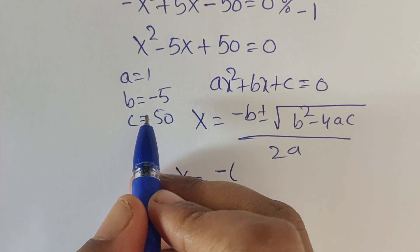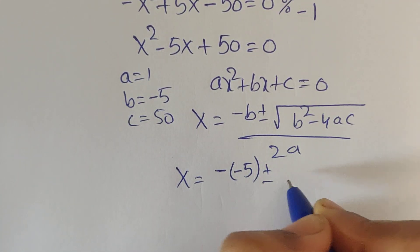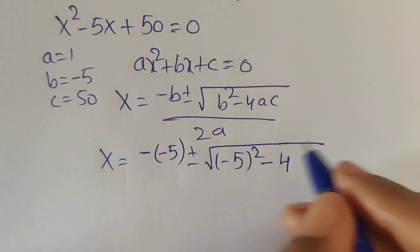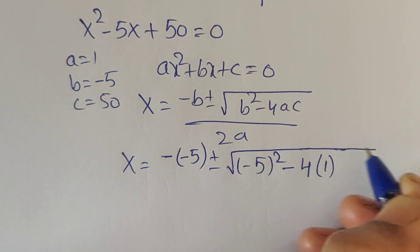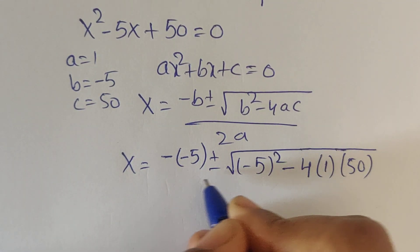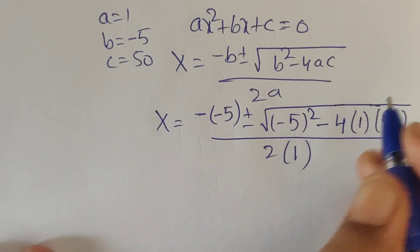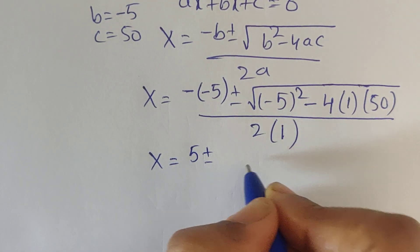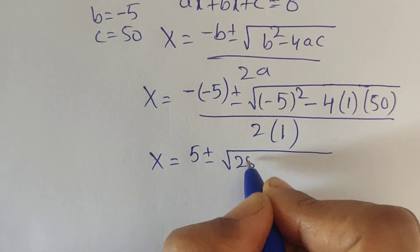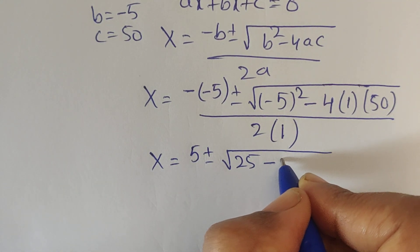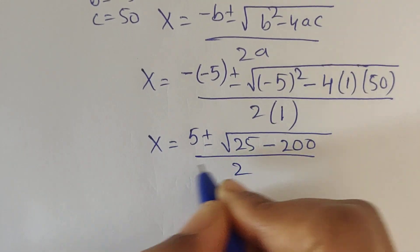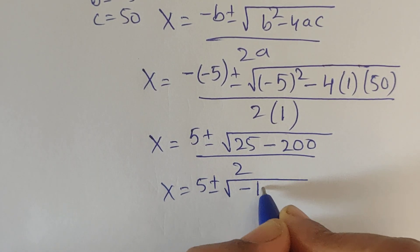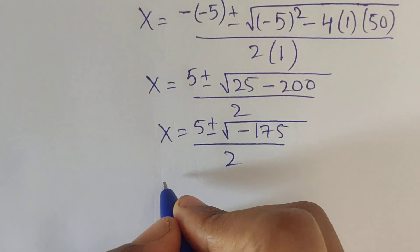Substituting the values: b is minus 5, a is 1, and c is 50. So x equals minus (minus 5) plus or minus square root of (minus 5) squared minus 4 times 1 times 50, divided by 2 times 1. This gives x equals 5 plus or minus square root of 25 minus 200 divided by 2, which equals 5 plus or minus square root of minus 175 divided by 2.